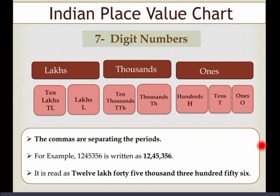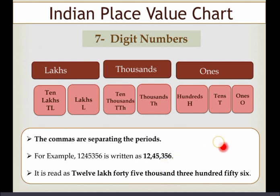Now, how do we read this number? This period is about lakh, so it is read as 12 lakhs. Then 45 is read as 45,000. And the last part is read as 356. Whenever you write these periods in the number name, you must use the singular form — that means 'lakh' not 'lakhs', 'thousand' not 'thousands', 'hundred' not 'hundreds'.